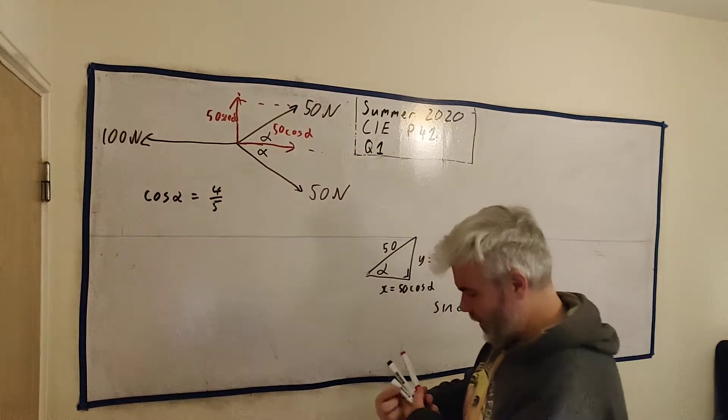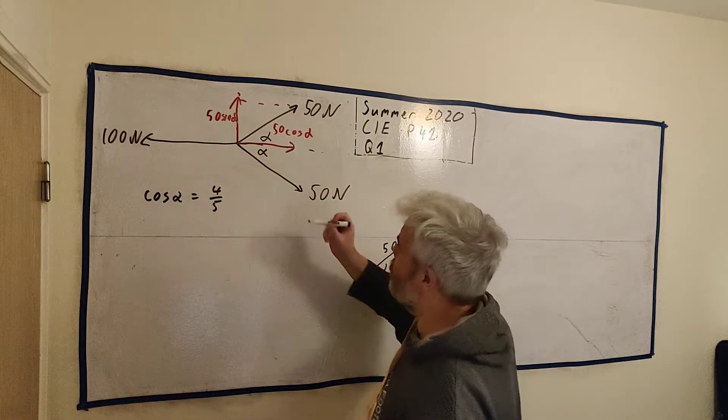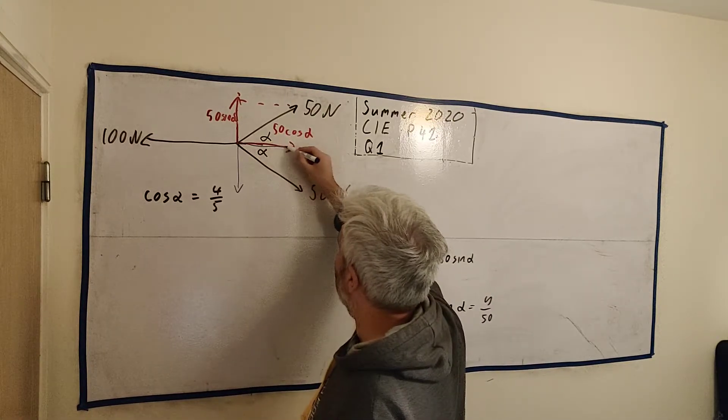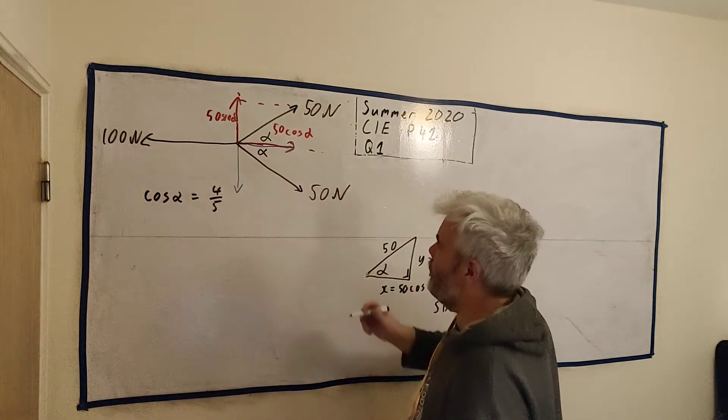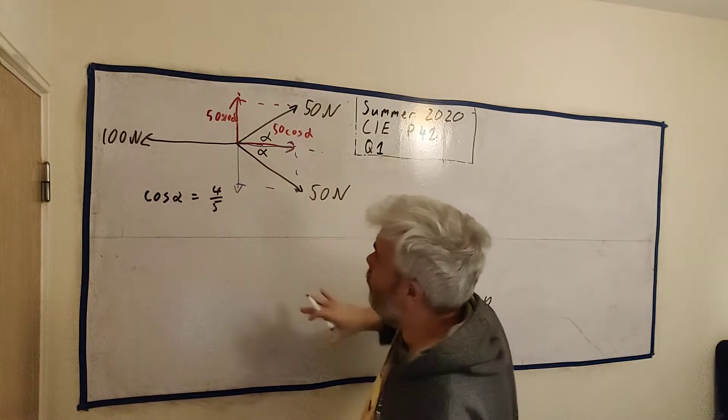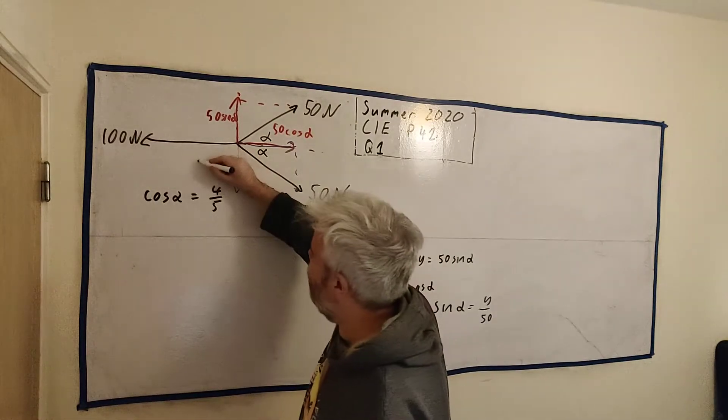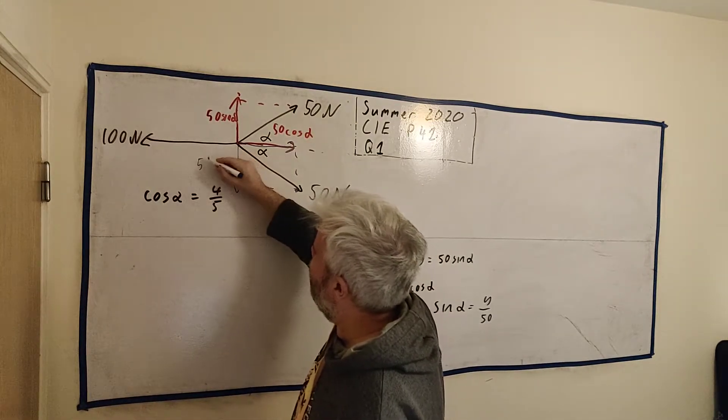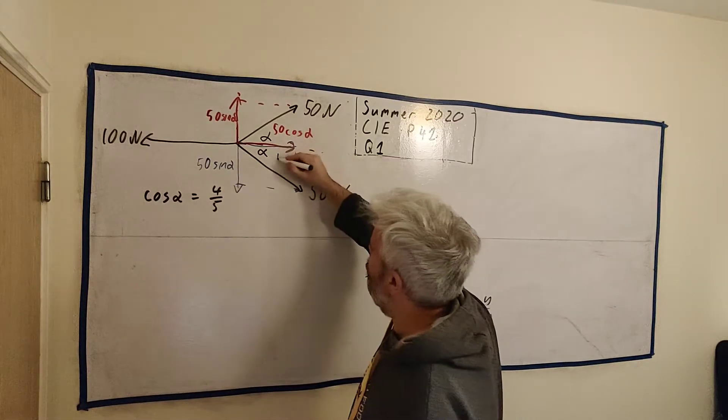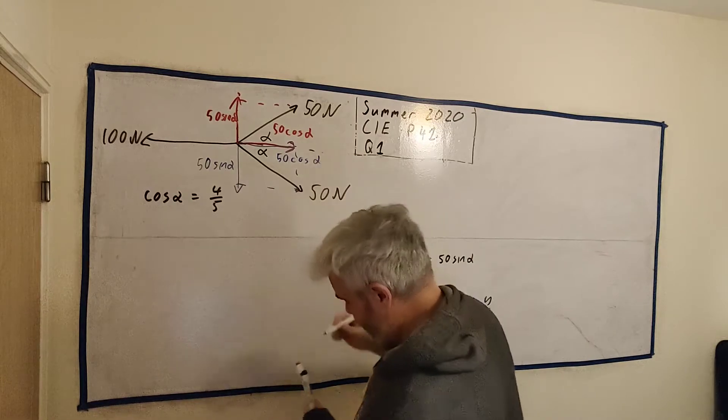And we do the same. I'll do this one in blue. A vector going this way and one on the same path as this one, going this way. So this one coming down, if we do something very similar, we'll just get 50 sine α. And this one here will just come out as 50 cosine α.